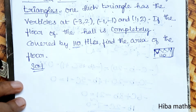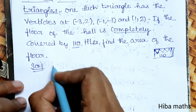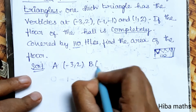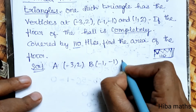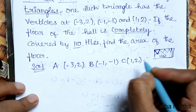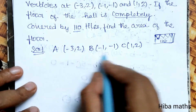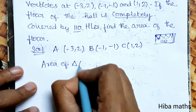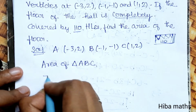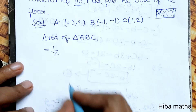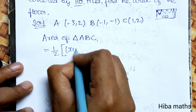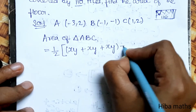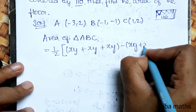The formula to find the area of a triangle given coordinates is: half times (x1(y2 - y3) + x2(y3 - y1) + x3(y1 - y2)).